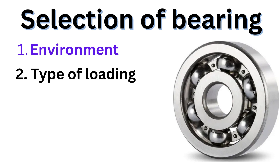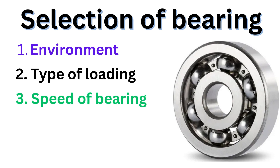The third criteria for bearing selection is the required speed of the bearing. High speed bearings require special considerations such as high clearance and rigidity compared to their lower speed counterparts. So the high speed requirement of the bearing is important to understand.